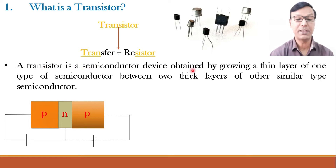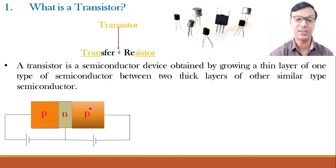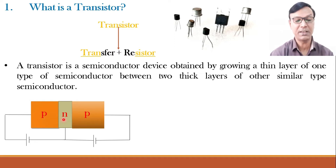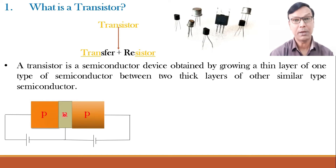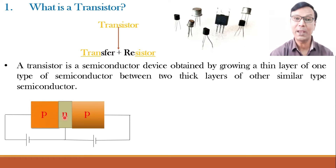A transistor is a semiconductor device obtained by growing a thin layer of one type of semiconductor between two thick layers of another similar type of semiconductor. These two are similar — P and P type — and this N is a different material sandwiched in between two P type materials. It can be the reverse also: there can be two N type materials with a P type material in between, known as a NPN transistor. This one is known as a PNP transistor.